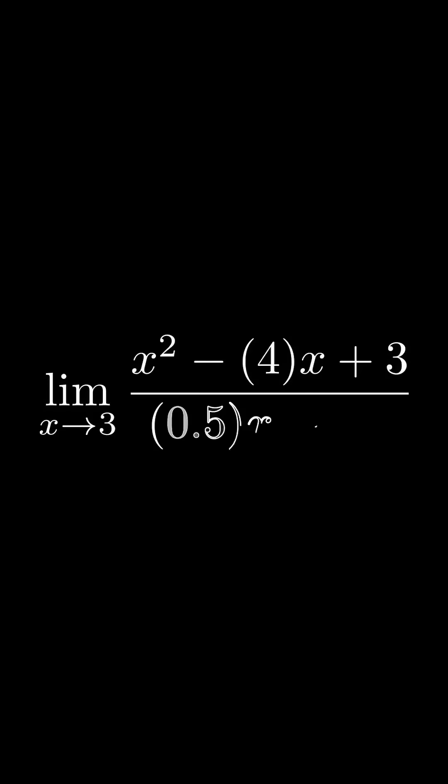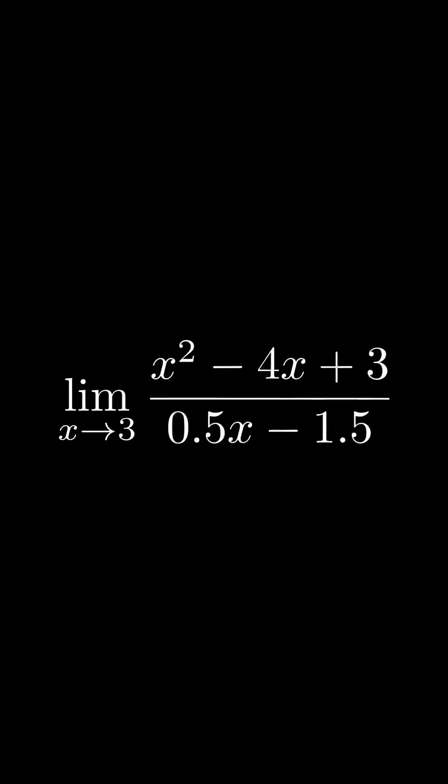For example, how would you find the value of this, a ratio between two functions that both equals 0 when at 3, where x is approaching 3?